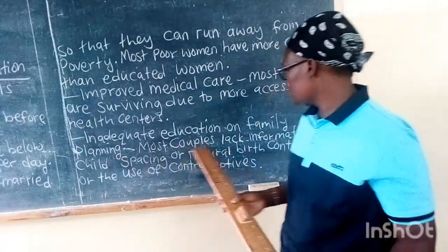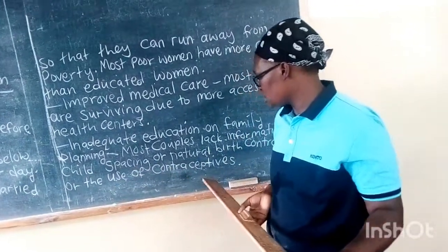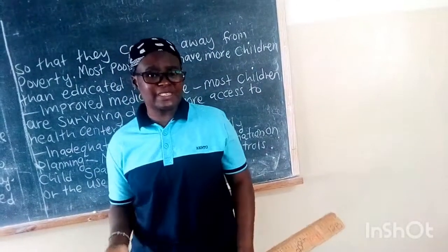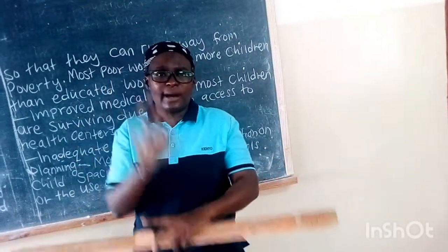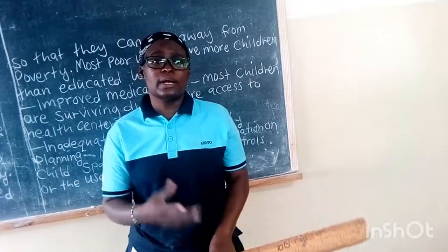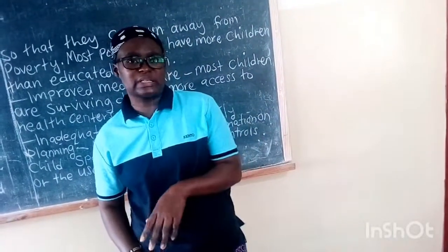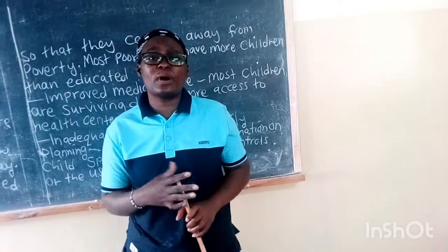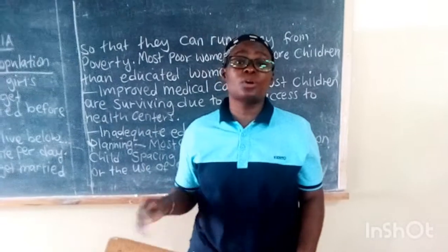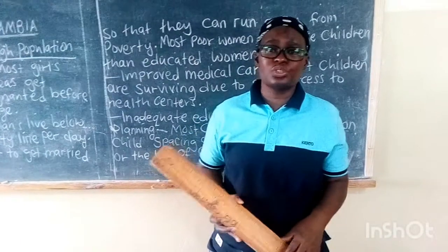Also, lack of education on family planning means most couples lack information on child spacing, natural birth controls, or the use of contraceptives. People in rural areas especially lack this information, which is why you find one family with eight or ten children. But in cities like Lusaka, couples may have only two or three children. If people have enough information on family planning, such as child spacing or natural birth control methods, this will help reduce the population increase.